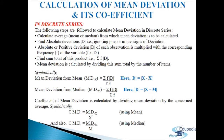The last step: mean deviation is calculated by dividing the sum total by the number of items. Symbolically, mean deviation from mean MD(mean) = sigma f·d / sigma f, where d = x minus mean. Mean deviation from median MD(m) = sigma f·d / sigma f. Coefficient of mean deviation is calculated by dividing mean deviation by the concerned average.